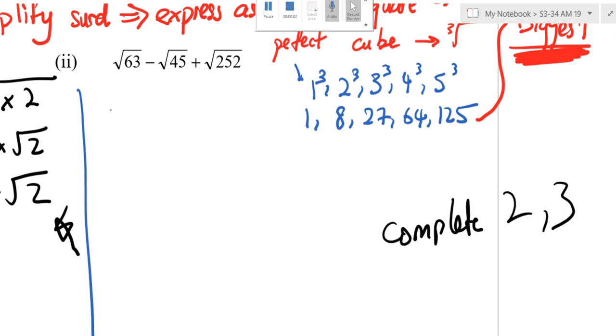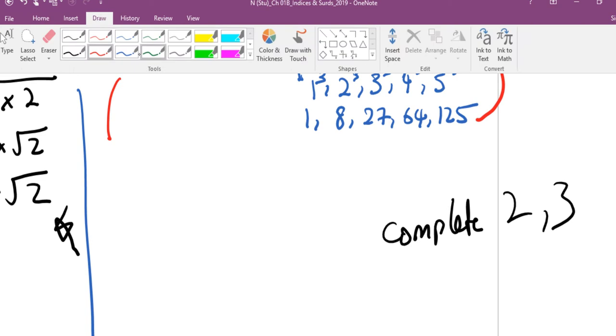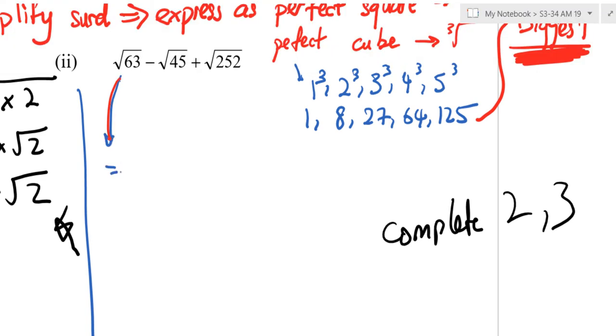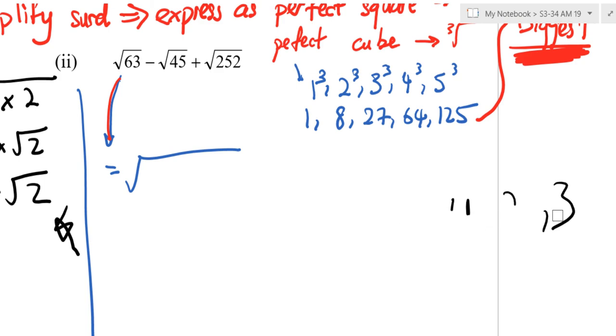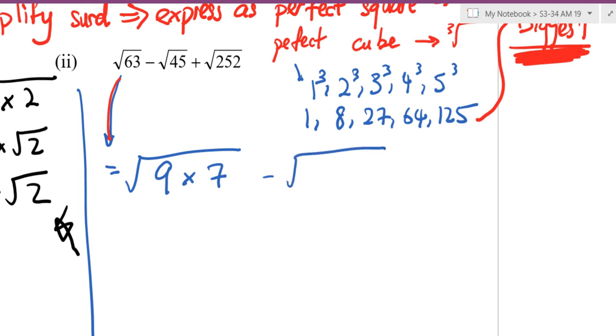Biggest perfect square. Let's have the first one, Isabella. 63 I can split into 2 perfect squares, 9 and 7. Notice I always put the perfect square in front.